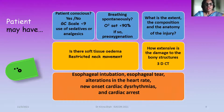The patient may have altered sensorium with a Glasgow Coma Scale less than 9, and the use of sedatives or analgesics must be done cautiously. Oxygen saturation may be around 90% with spontaneous breathing, so pre-oxygenation should start in the emergency room.